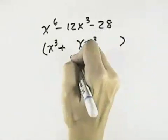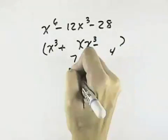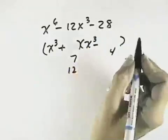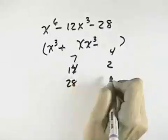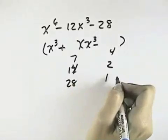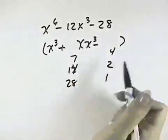Looking at the 28, we can break that down into 7 and 4. Whoops. 14 and 2. So 28 and 1. And let's see if I missed any. That looks like that's it.